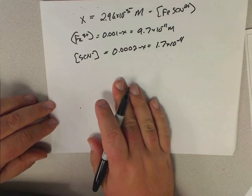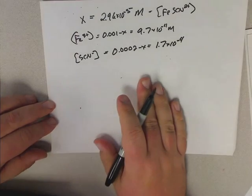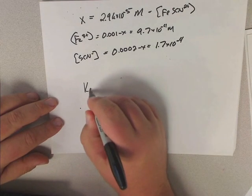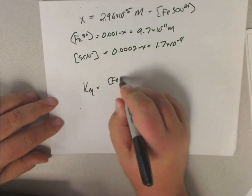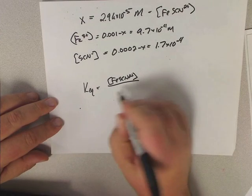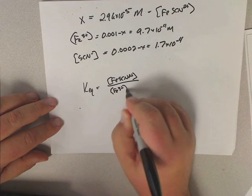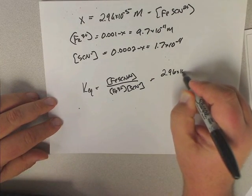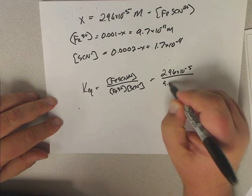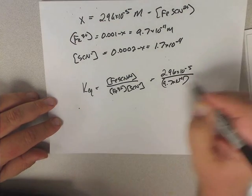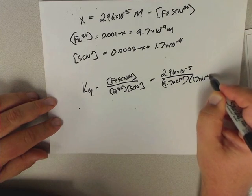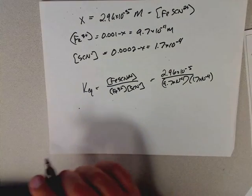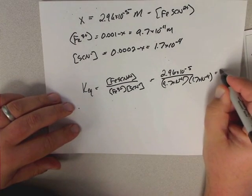So now we have iron, we have Fe3+, and we have SCN-. We know the Keq is going to equal FeSCN2+ divided by Fe3+ times SCN-. We should just then be able to set this up: 2.96 times 10 to the minus 5th divided by 9.7 times 10 to the minus 4th times 1.7 times 10 to the minus 4th. When we do that, we get a number of 178.